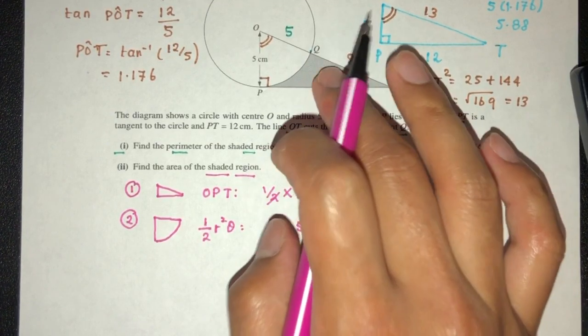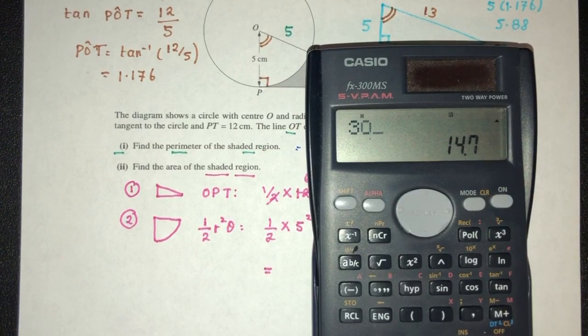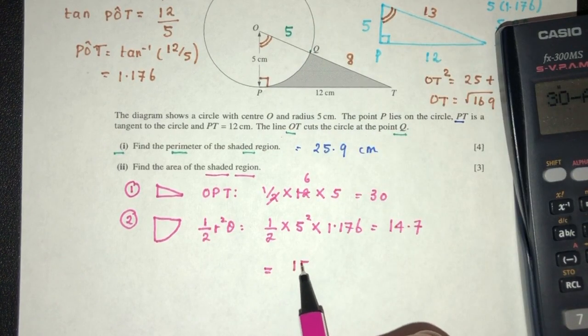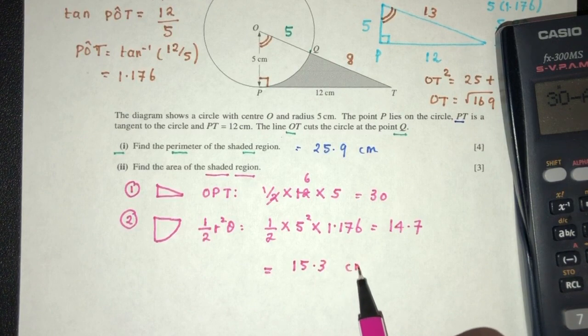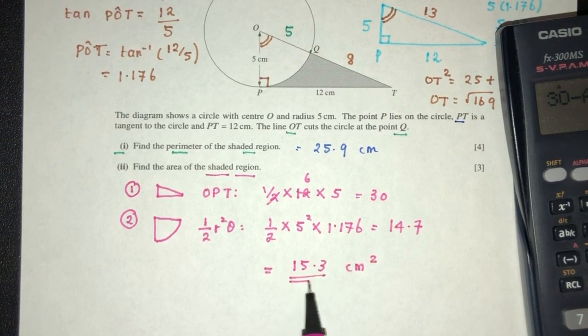So finally, to find this one, 30 minus your value should be 15.3. That is your value correct to 3 significant figures for the area of the shaded region.